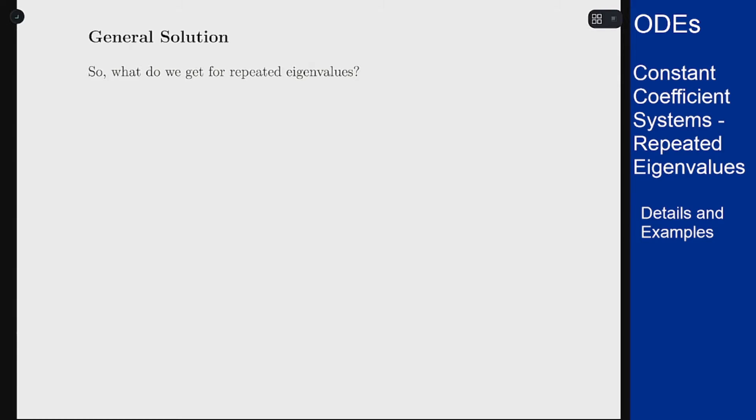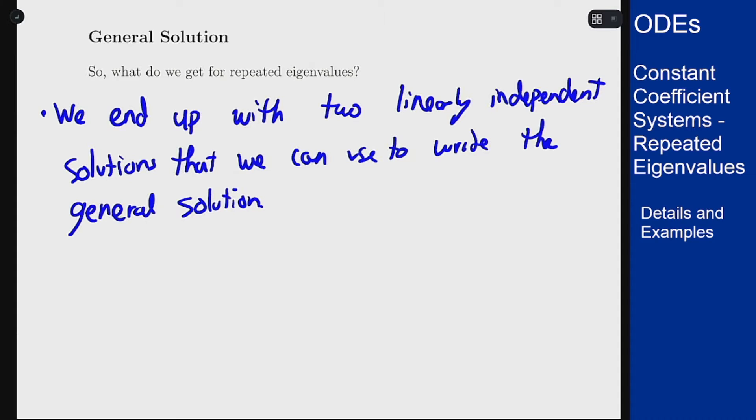So what do we end up getting out of that entire process of generalized eigenvectors for these problems? Well, the end result is we do end up with two linearly independent solutions that we can use to write a general solution. It's a little more complicated to get to than the ones for real and distinct roots, but the idea is the same. Once I get these two solutions, I write them with constants to get a general solution and then I can do whatever I want from there.